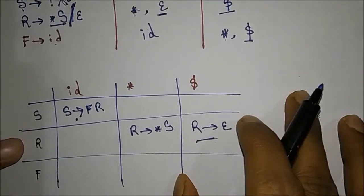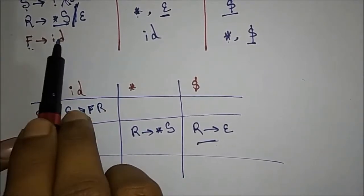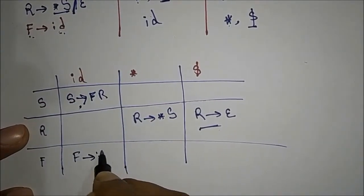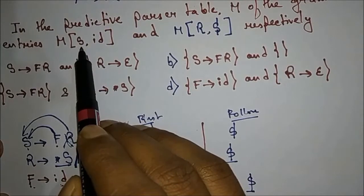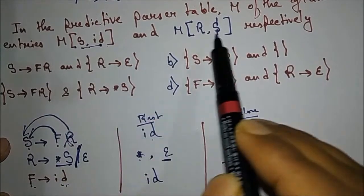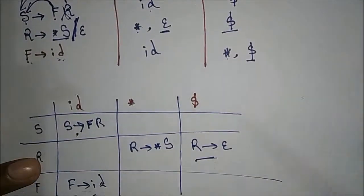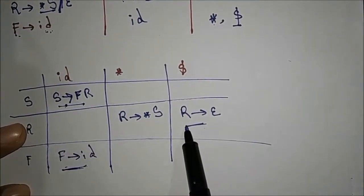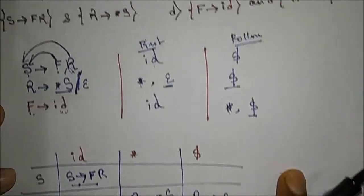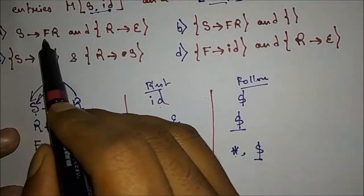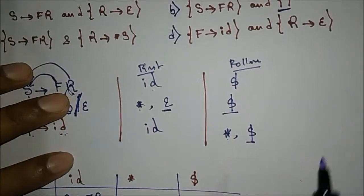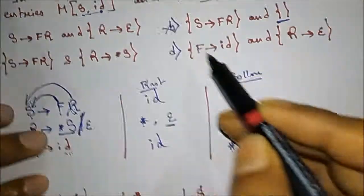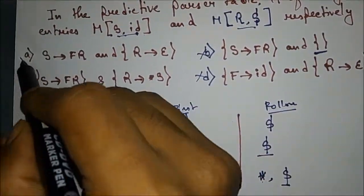For F → ID: FIRST(F) = {ID}, so it is placed in M[F, ID]. The question asks for M[S, ID] and M[R, $]. We found that M[S, ID] contains S → F R, and M[R, $] contains R → ε. Matching with the four given options, this corresponds to option A. So A is the right answer.